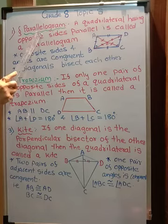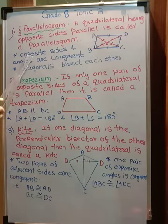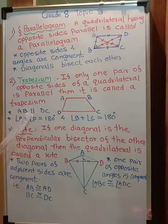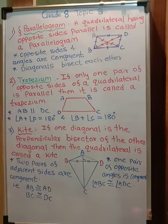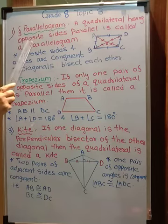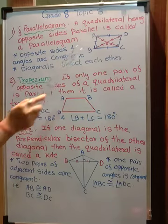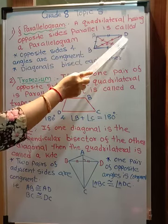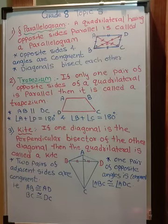First is parallelogram. Look at the name 'parallel' - this itself tells you the definition. A quadrilateral having opposite sides parallel is called a parallelogram, very easy to remember. Opposite sides means AD will be parallel to BC and AB will be parallel to DC.